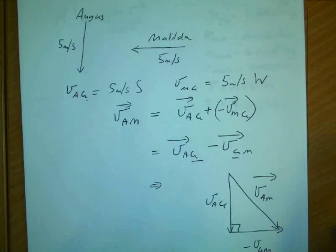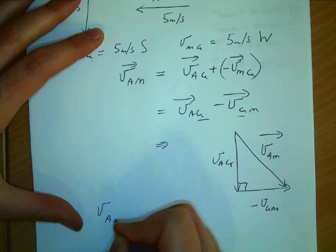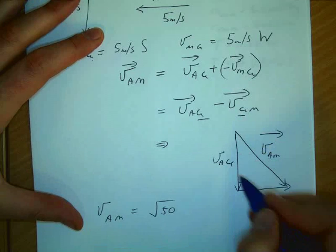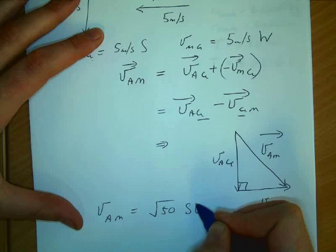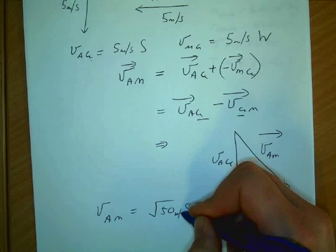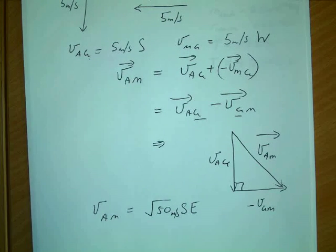And we use Pythagoras and we get VAM is equal to the square root of 50. What's the direction? South, east. South 45 degrees east or just southeast. And that should be metres per second. Correctamundo? Happy with that? Thank you.